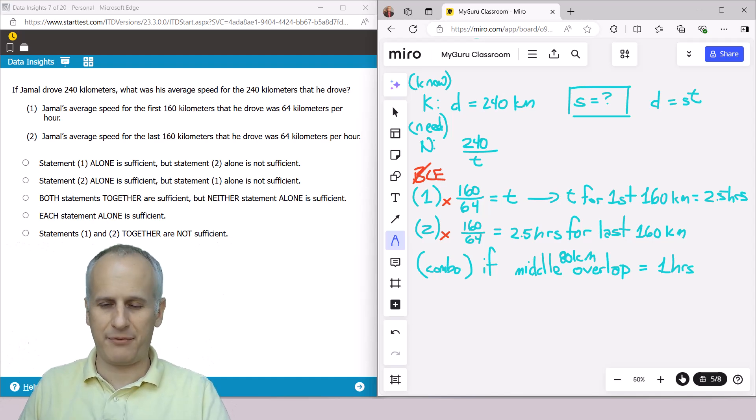So if we've got 80 kilometer overlap is one hour, well then the total time is going to be equal to one hour plus one and a half hour for the first part, plus one and a half hour for the last part, which is going to get me four hours.